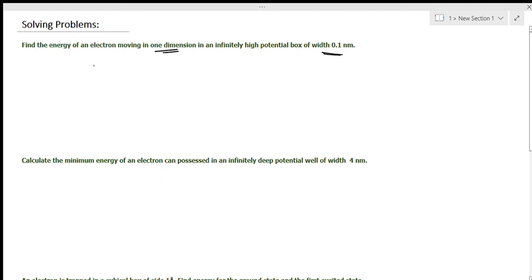The given value is the width of the box: 0.1 nanometer. Converting nanometer into meter: 0.1 × 10⁻⁹ meter. The formula for this is energy, so En = n²h²/(8ma²) in joules.